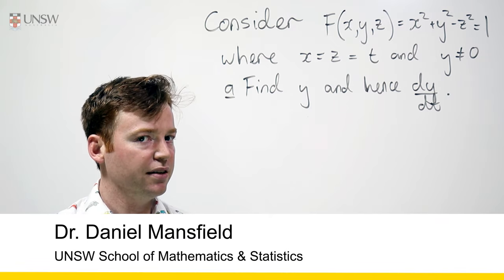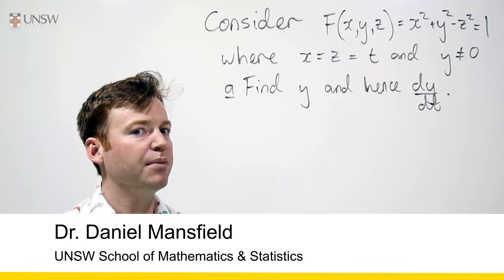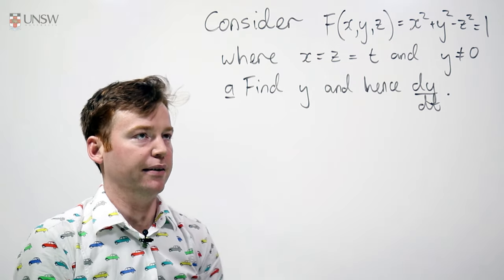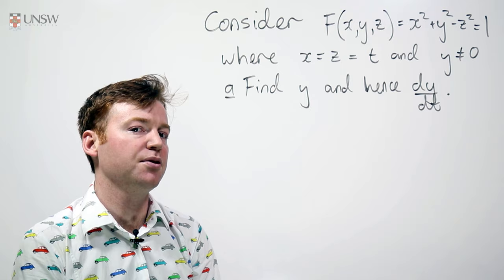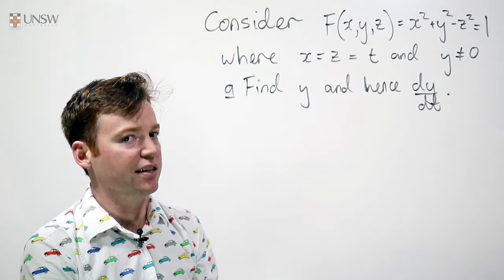Hello. This is a question about the chain rule, in particular about its geometric meaning. We're invited to consider the hyperboloid x squared plus y squared minus z squared is equal to 1.